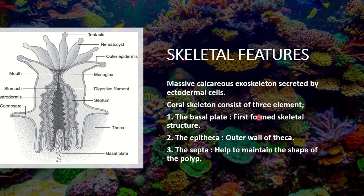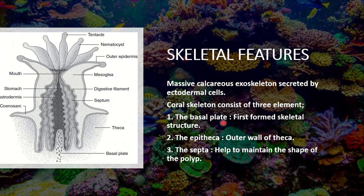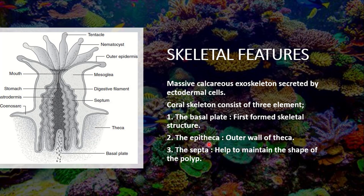The basal plate is the first form of the skeletal structure, which is attached to the base and anchored to the substratum. The second element is the epitheca. The epitheca is basically the outer wall of the theca. The theca is a cup-like structure, as you can see in the picture. The epitheca is also one of the most important elements in the skeletal structure of corals.